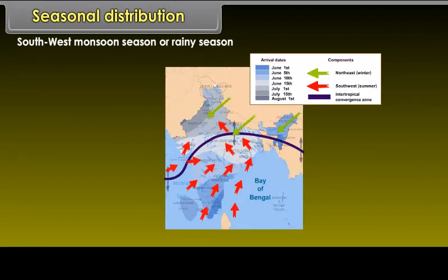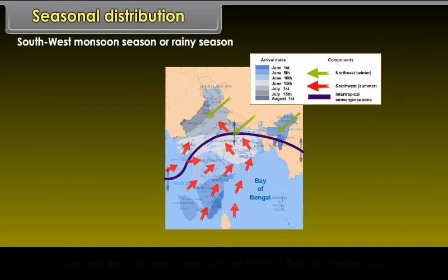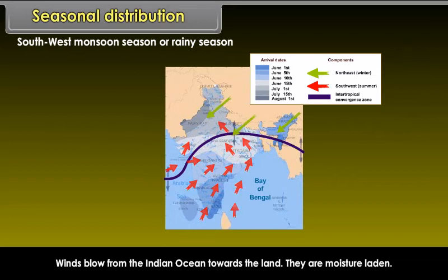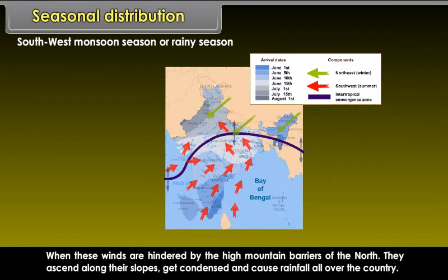The southwest monsoon season or rainy season is characterized by the onset and advance of monsoon. Winds blow from the Indian Ocean towards the land and are moisture-laden. When these winds are hindered by the high mountain barriers of the north, they ascend along their slopes, get condensed, and cause rainfall all over the country.